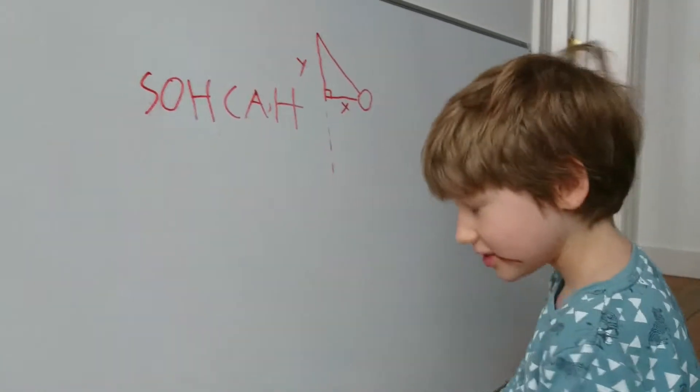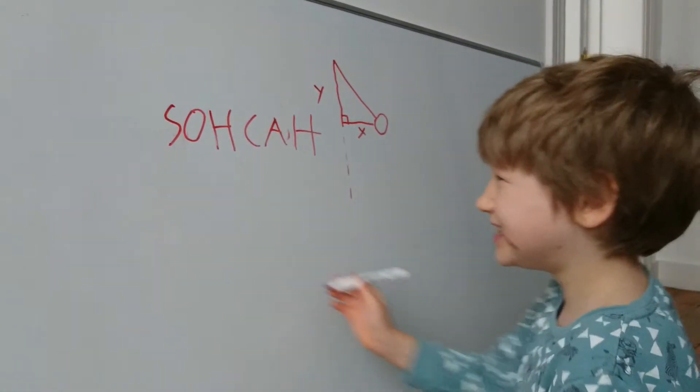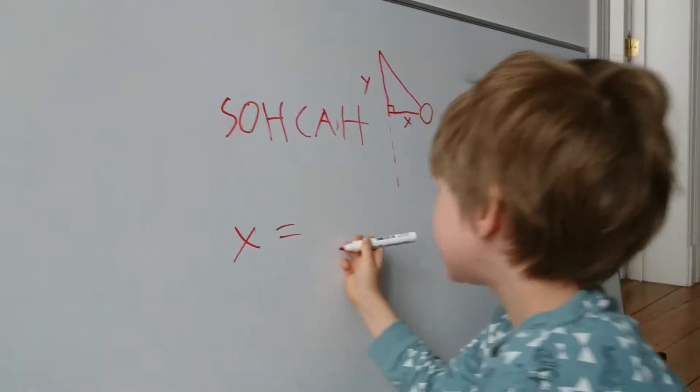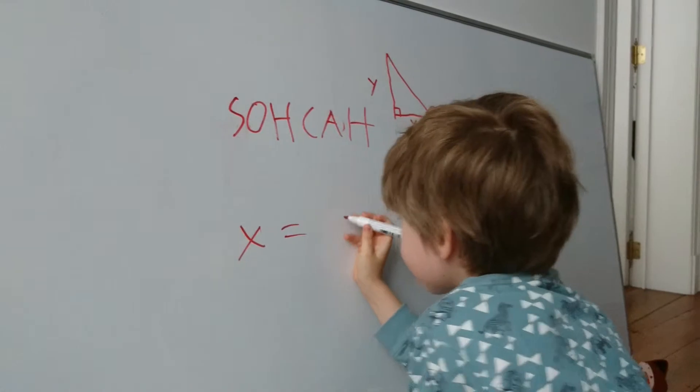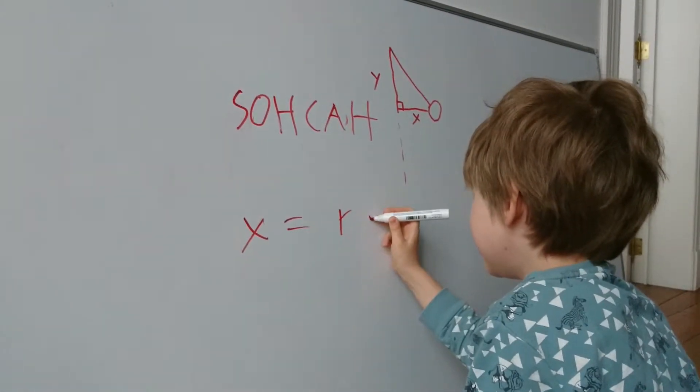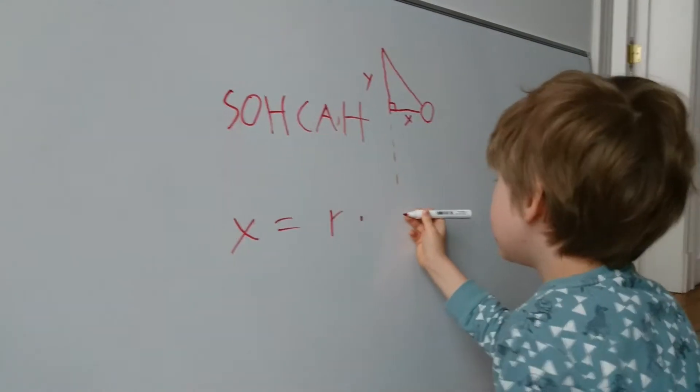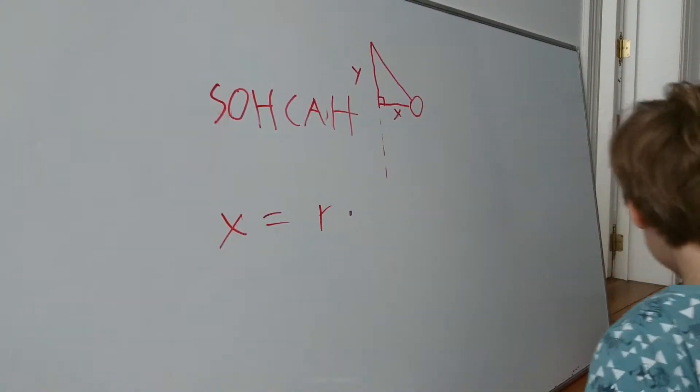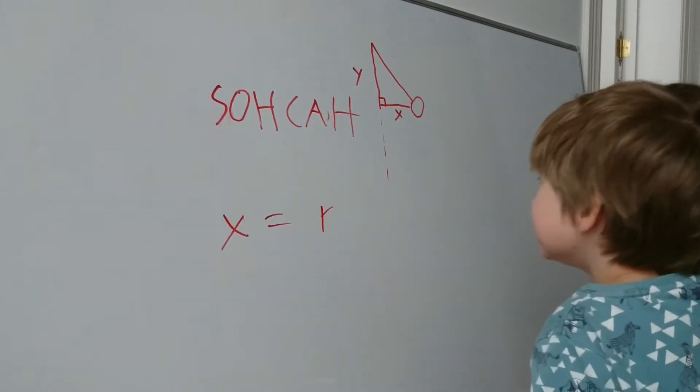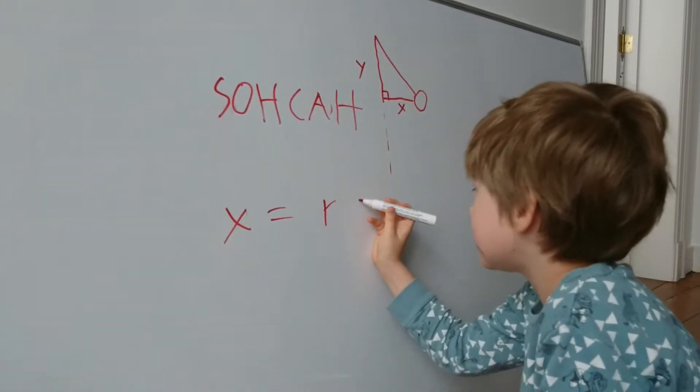Okay, so instead, it's actually X equals R times - and this time, not cosine. Remember, we're up to the Y axis now. This time it's sine.